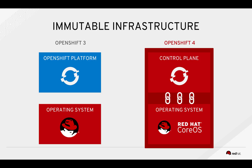With OpenShift 4, we've recognized that these two boxes are inherently linked. So we're bringing the operating system under control of the cluster. The cluster can manage pools of Red Hat CoreOS machines and their configuration and their lifecycle — recognizing that these two are just inherently linked and really important for the stability of the cluster.